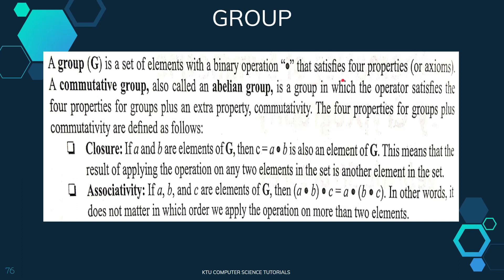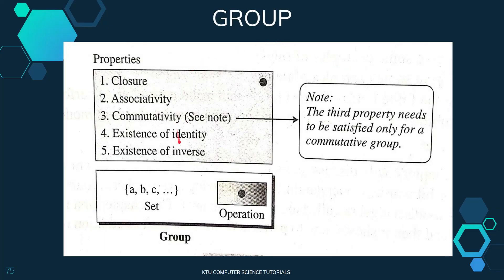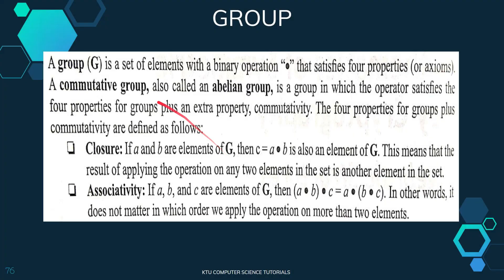A group satisfies four properties, called axioms. In addition to these four axioms, if the commutativity property is also satisfied, we have a commutative group. The commutative group is called an abelian group.